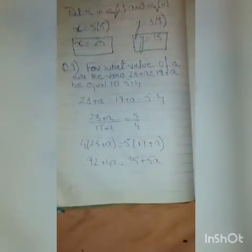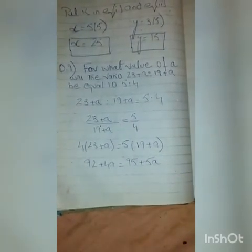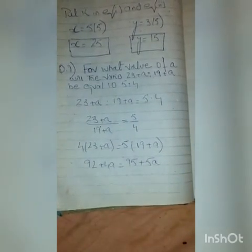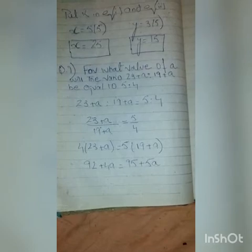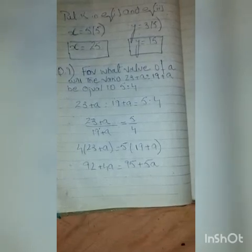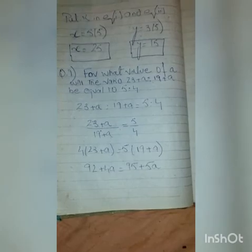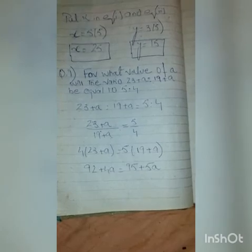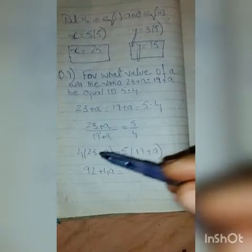We substitute k = 5, so x = 25 and y = 15. Next problem: for what value of A will the ratio (23 + A) to (19 + A) be equal to 5 to 4? So (23 + A) divided by (19 + A) equals 5 upon 4. We cross multiply.